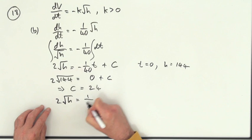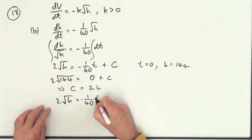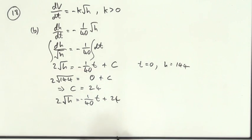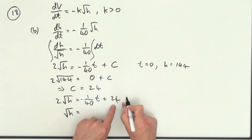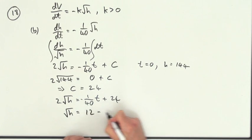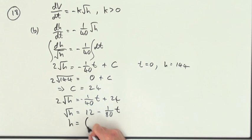Now we've got this back to this equation then. 2 root H is negative 1/40 of T plus 24. Almost there. Take that 2 across, and half these numbers. Root H equals, I think I'll put that to the front, so 12 minus. Now we're going to half that, that's going to go to 1/80 of T. And then finally, square both sides, H equals 12 minus 1/80 of T squared.